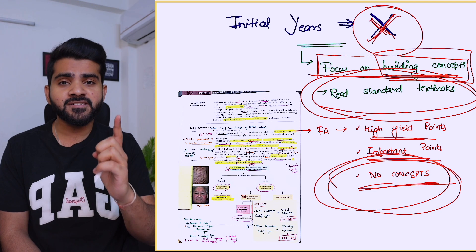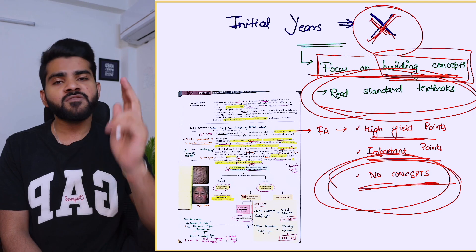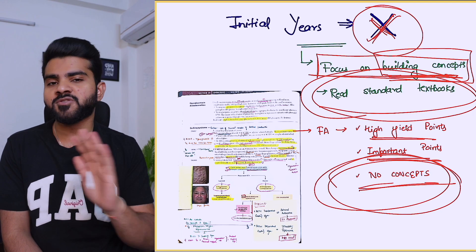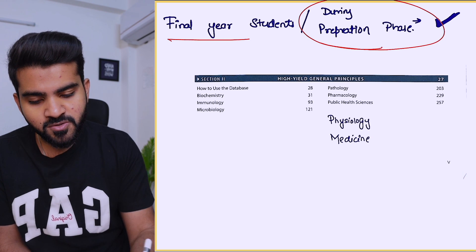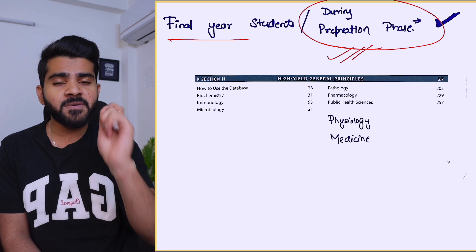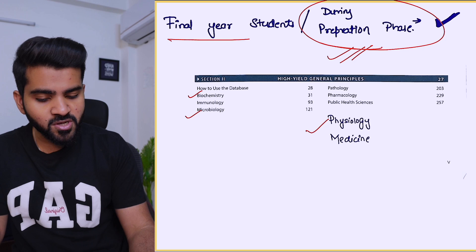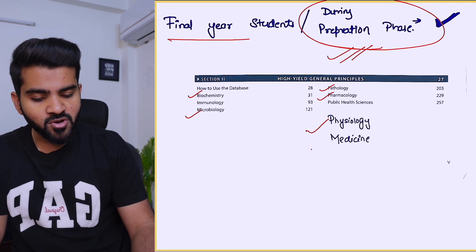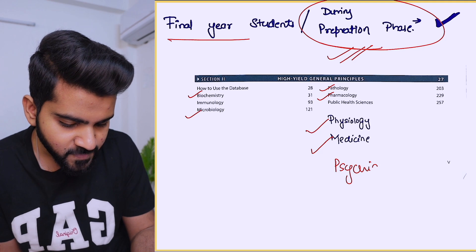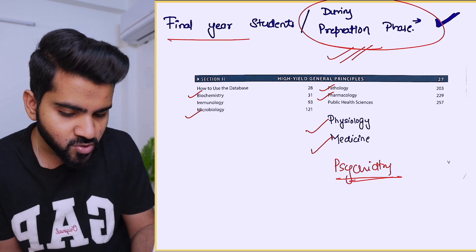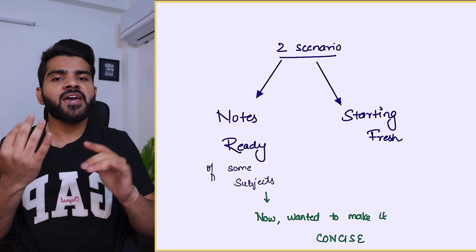For building concepts, you have to read standard textbooks, not First Aid. First Aid contains all one-liners — seven subjects in just 600 pages — because there are important points and frequently asked topics, but no concepts. Now, for final year students and those in the preparation phase, First Aid is your best resource for these seven subjects: biochemistry, microbiology, physiology, pathology, pharmacology, medicine, and psychiatry.